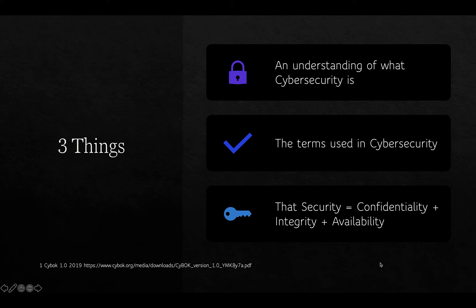In this lecture, we're going to go through some of the terms that are central to cyber security. By the end of this lecture, you should have an understanding of what cyber security is, the key terms used in cyber security, and more fundamentally the three attributes that we try to control within cyber security: confidentiality, integrity, and availability.